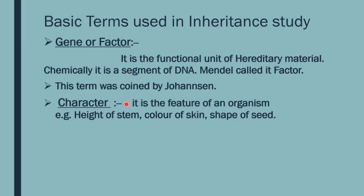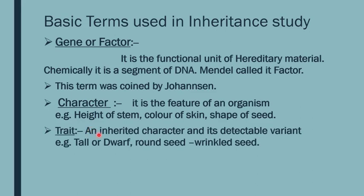What is a character? Any physical feature of an organism — height of a stem, color of skin, shape of a seed — is termed a character. What is a trait? An inherited character obtained from parents with a detectable variant is termed a trait. For example, tallness or dwarfness is inherited from the parent, and tall has a detectable variant — dwarf. Round seed has a detectable variant — wrinkled seed.